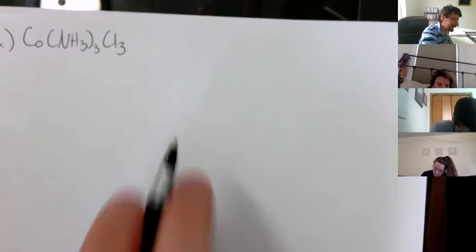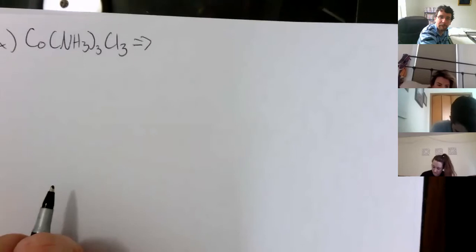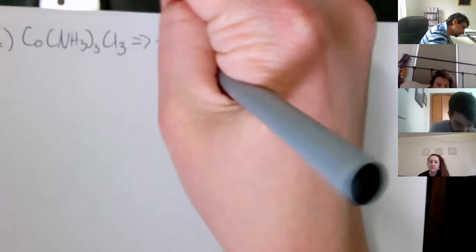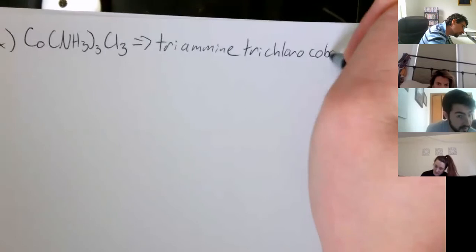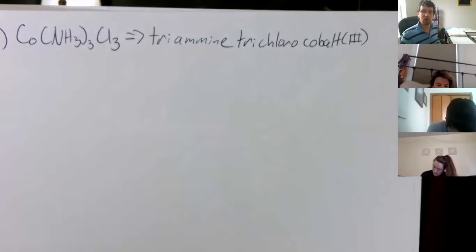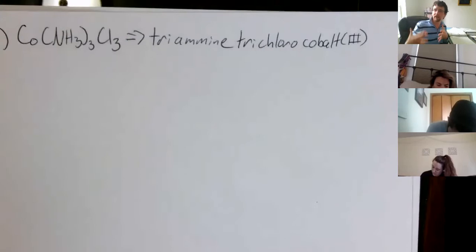Example: Co(NH₃)₃Cl₃. Before we do anything, let's get the name. It's triammine trichloro cobalt(III). You should be at the point where you can look at those formulas and just name them. If there's a complicated ligand it might take a little more time, but you should be pretty good at that. Let's try to describe the fac and mer structures.